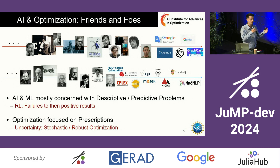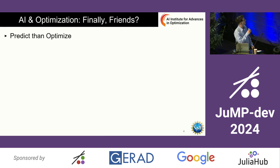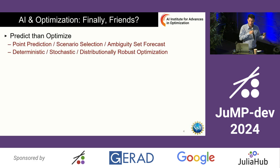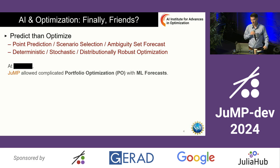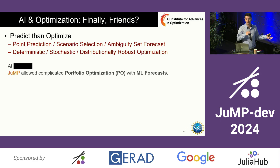Optimization for a long time used more or less simplistic ways to describe the world — uncertainties through scenarios, estimation of uncertainty, and robust methods. But we do have some history together: we can use machine learning to do predictions about uncertainties, estimations of probabilities of certain scenarios, or estimation of ambiguity sets, and then feed that as input to an optimization problem. At my previous company we did that in a successful way — building complicated portfolio optimization problems and using machine learning forecasts as inputs.